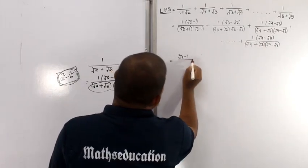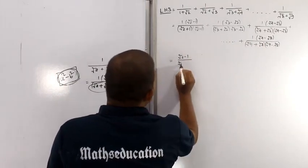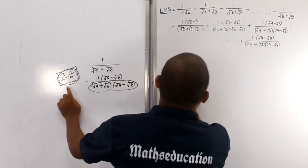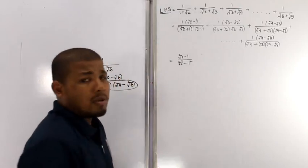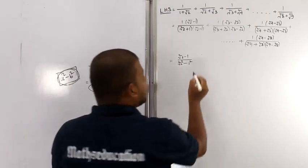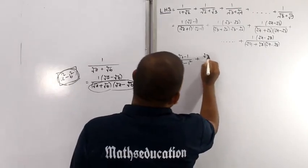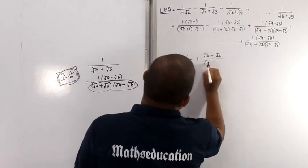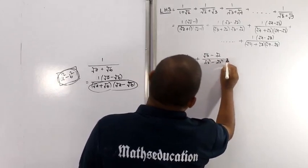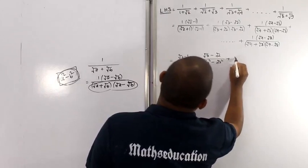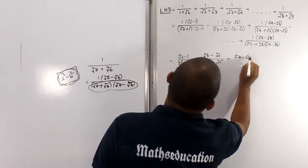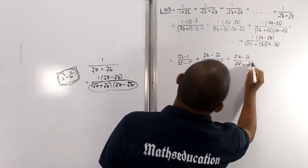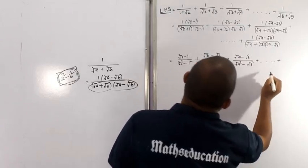After rationalization we get: root over 2 minus root over 1, divided by root over 2 squared minus 1 squared, plus root over 3 minus root over 2, divided by root over 3 squared minus root over 2 squared, plus root over 4 minus root over 3, divided by root over 4 squared minus root over 3 squared, and so on.